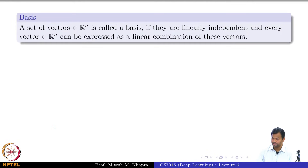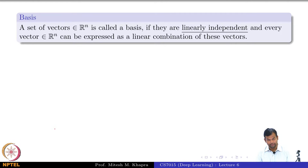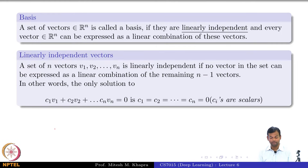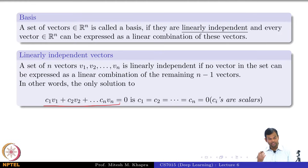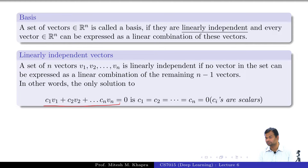How many of you know what a basis is? A set of vectors belonging to Rⁿ is called a basis if they are linearly independent and every vector in Rⁿ can be expressed as a linear combination of these vectors. A set of n vectors v1 to vn is linearly independent if no vector in the set can be expressed as a linear combination of the remaining n minus 1 vectors. The only solution to this linear combination is all the Cᵢ equal to zero.